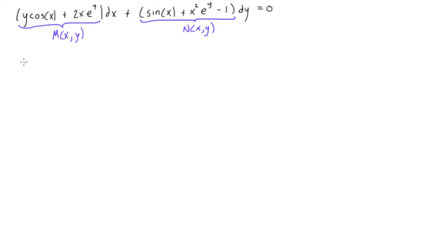Let's go ahead and do that. We'll take the partial derivative of M with respect to y, term by term. The partial derivative of y cos x with respect to y is just cos x, because everything with x in it is treated as a constant. Plus we would have 2x e to the y — that's this term's partial derivative with respect to y.